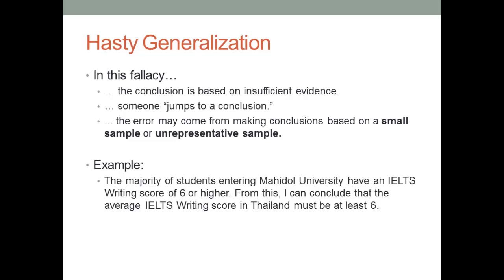Let's look at one more example. Say we look at the IELTS scores of students entering Mahidol University and see that the majority have an IELTS writing score of 6 or higher. If we generalize from this and say that the average IELTS writing score in the entire country must be the same as for students entering Mahidol University, we would be guilty of a hasty generalization — because we're looking at students entering one particular university where students probably have higher IELTS scores than the national average.